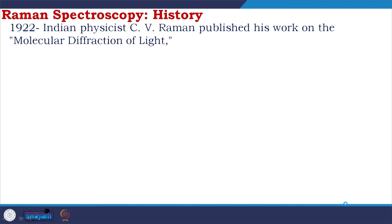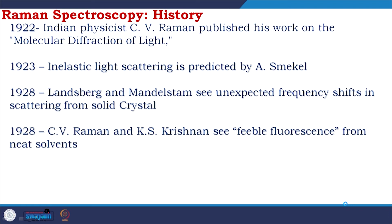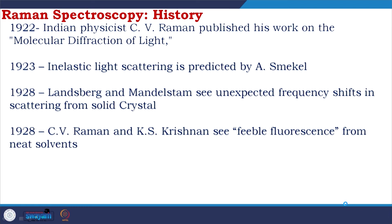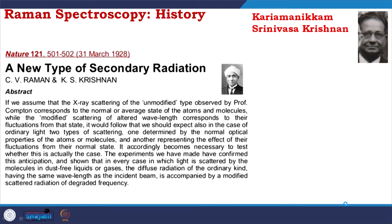A brief history: in 1922, Indian physicist C.V. Raman published work on the molecular diffraction of light. In 1923, inelastic light scattering was predicted by A.S. Mekkel. In 1928, Landsberg and Mandelstam saw unexpected frequency shifts in scattering from solid crystals. Also in 1928, C.V. Raman and K.S. Krishnan observed feeble fluorescence from neat solvents — producing the first Raman spectra using a filtered mercury arc lamp — and published their work in Nature titled 'A New Type of Secondary Radiation.'